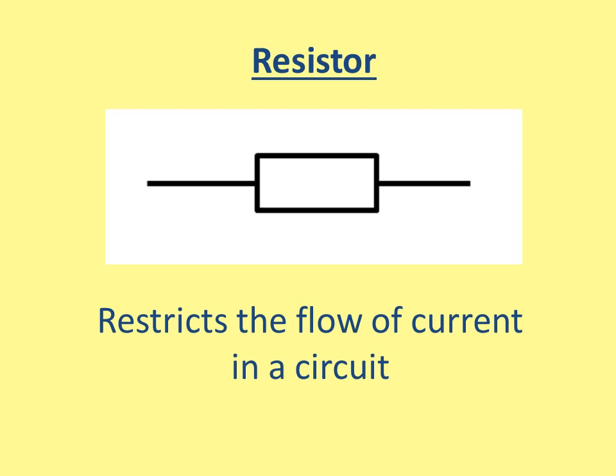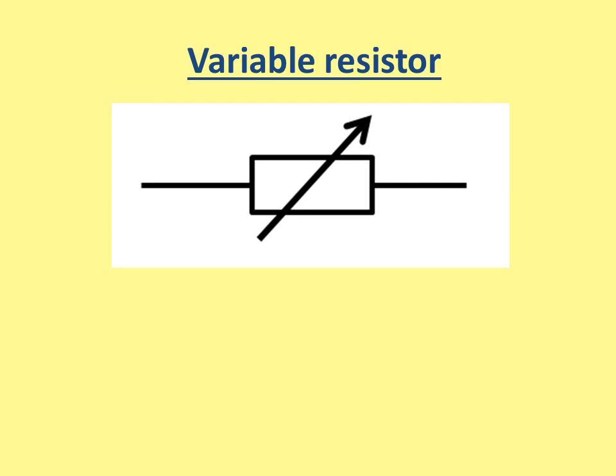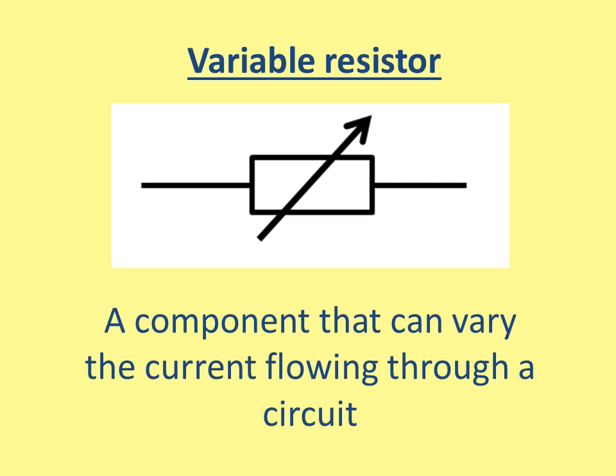Here's a resistor. Resistors restrict the flow of current. A variable resistor is very similar to a resistor, but you can change the resistance and therefore change the current flowing through a circuit. It's represented by the rectangle with an arrow through it.